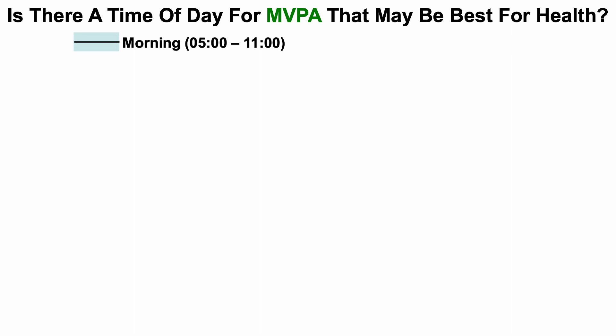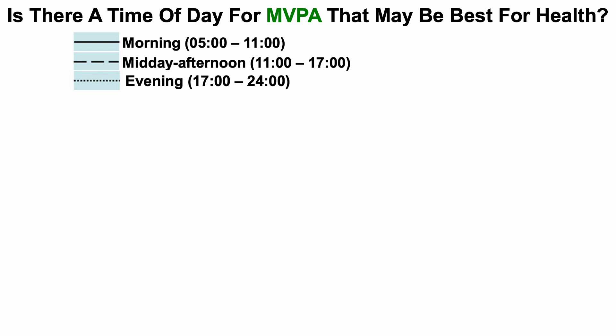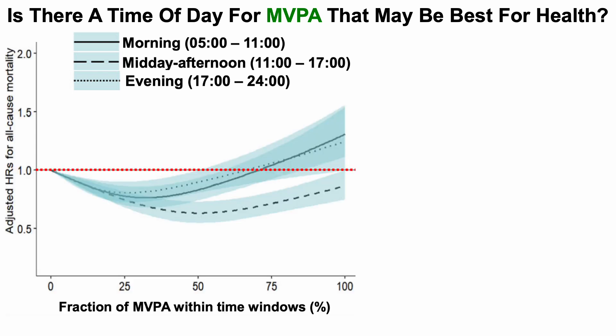In this study, they looked at three time points: morning, defined as 5 AM to 11 AM; midday to afternoon, from 11 AM to 6 PM; and evening, from 6 PM to midnight. The y-axis again shows the adjusted hazard ratio for all-cause mortality risk, but now the x-axis shows the fraction of moderate to vigorous physical activity within each of these three time windows.